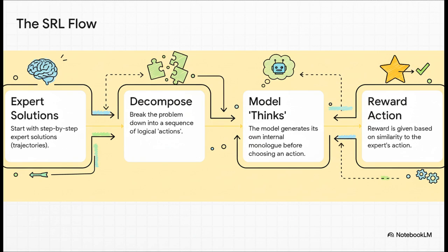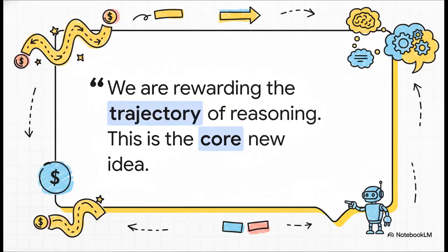And finally, it gets a reward based on how closely its chosen action matches what the human expert did at that exact same step. So this is the absolute key. We're not just rewarding the final answer. We're not even micromanaging its entire chain of thought.